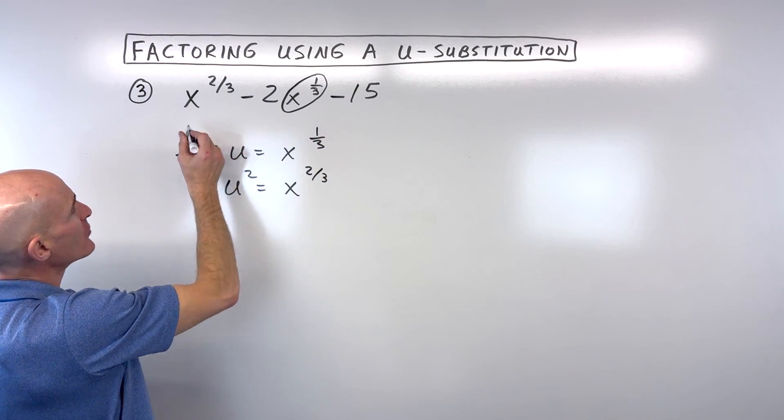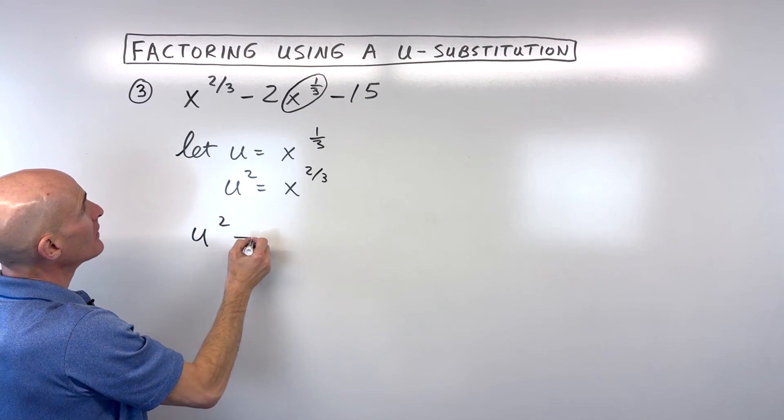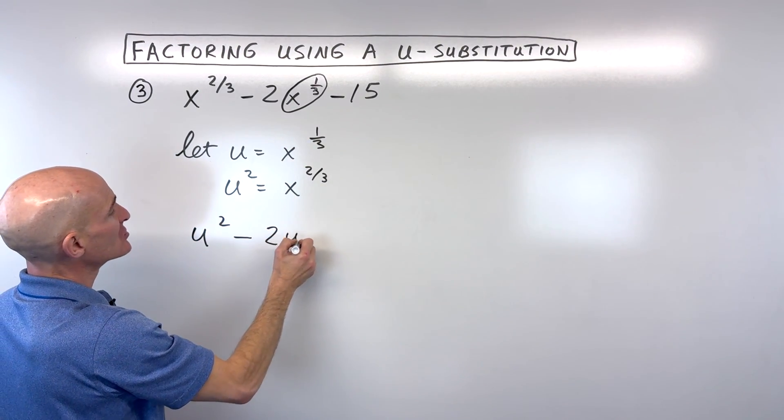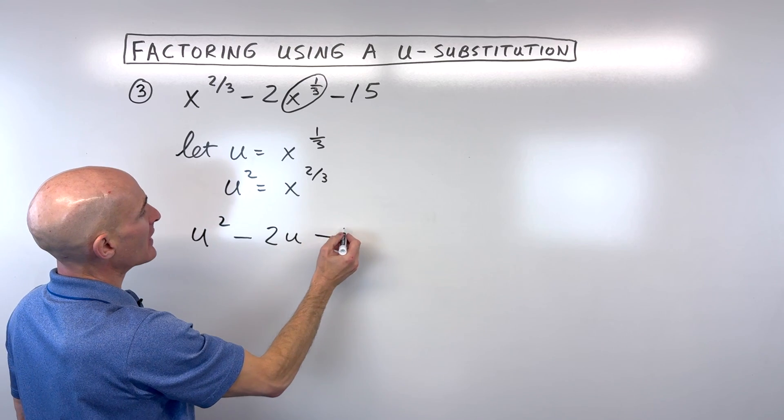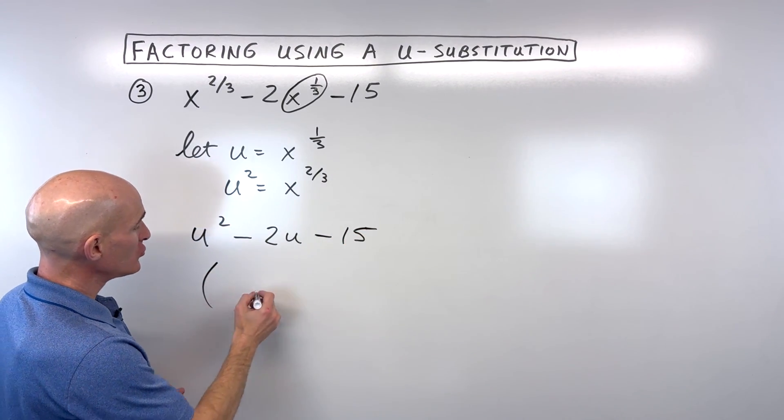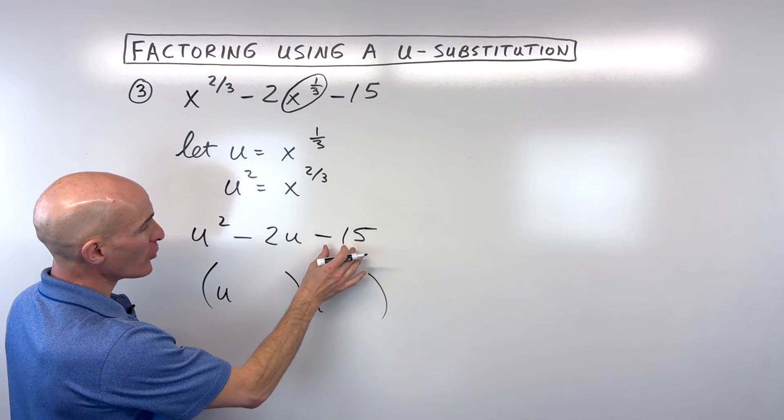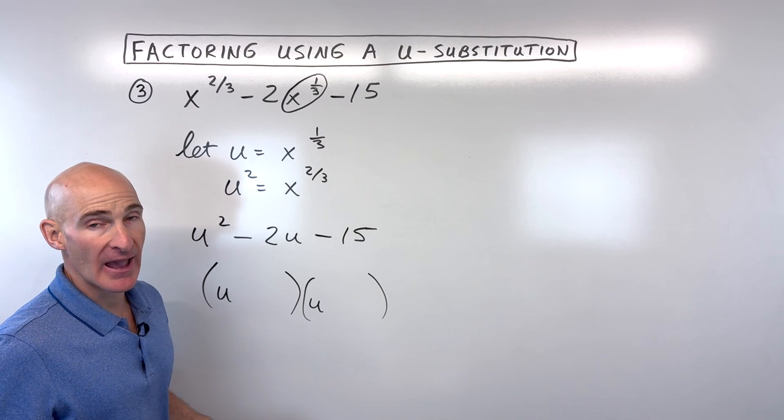Now what I can do is I can rewrite it a little bit. So x to the two-thirds, that's u squared. Over here we have minus 2u, because x to the one-third, and then minus 15. So you can see this is a quadratic trinomial. We want to factor it into two binomials. And let's think of two numbers that multiply to negative 15 but add to negative 2.